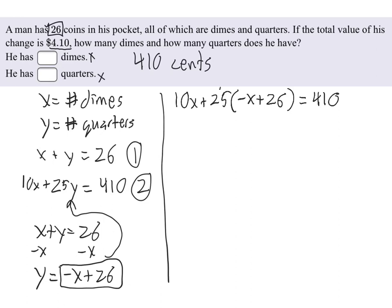We first have to take our 25 and we're going to distribute it inside the parentheses here. And what that gives us is 10x minus 25x plus 650 equals 410. So a little bit of combining like terms here.